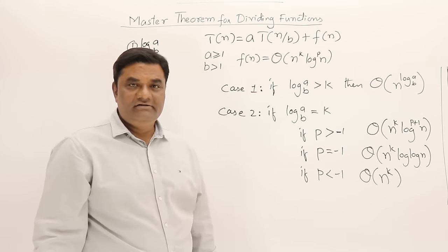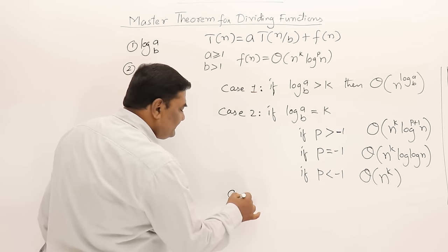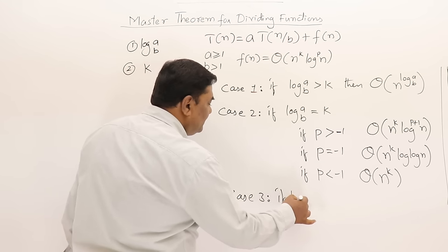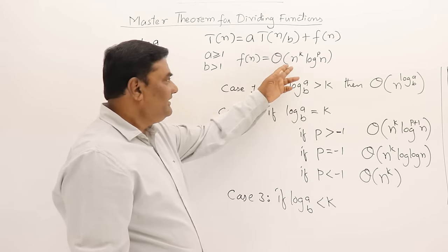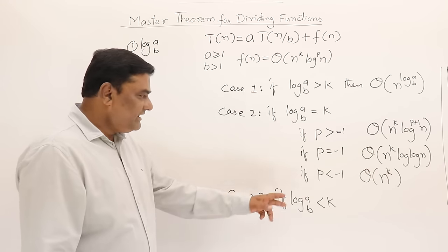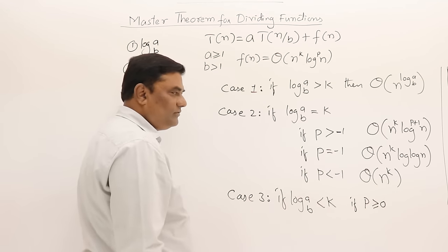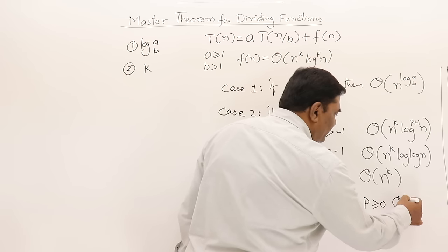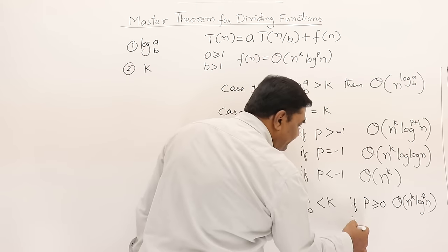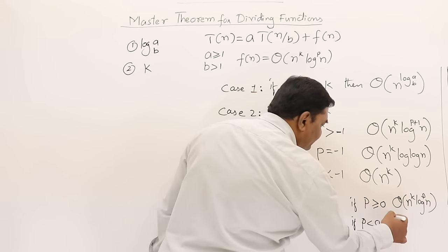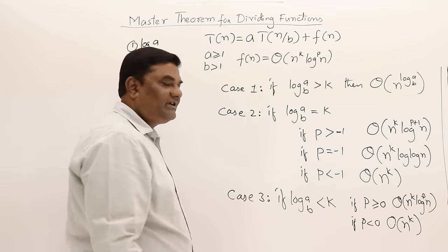So there are three sub-cases in Case 2. Case 3: if log(a) base b is less than k — meaning n^k is greater — then again there are three sub-cases. If p is greater than or equal to 0, the answer is Theta(n^k * log^p(n)). If p is less than 0, the answer is Big-O(n^k), discarding the log term.